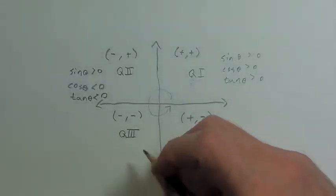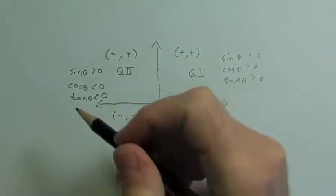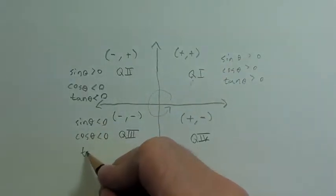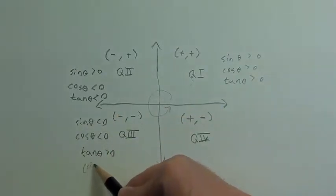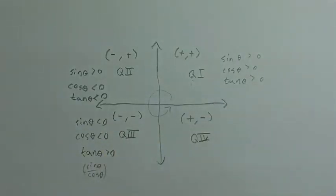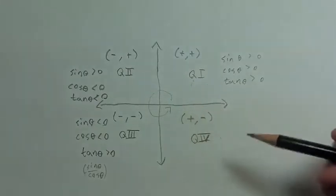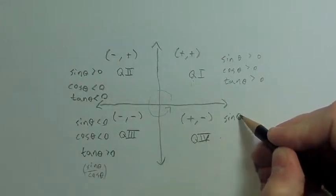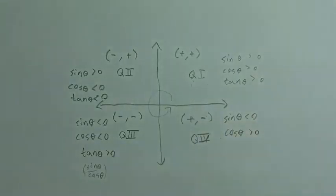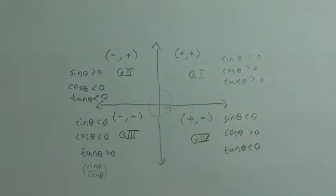In quadrant three, both components of the point are negative, so sine will be negative, cosine will be negative, but tangent will actually be positive — because tangent is sine over cosine, so if we take a negative divided by a negative, it comes out positive. And then in quadrant four, our x-coordinate is positive but our y-coordinate is negative, so sine will be negative, cosine is positive, and tangent will be negative once again since these are opposite signs.